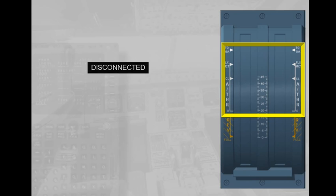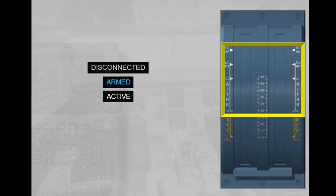The autothrust has three states: it can be either disconnected (or off), armed — ready to be set to on by a specific pilot action on the thrust levers — or active (on).